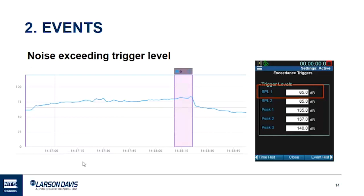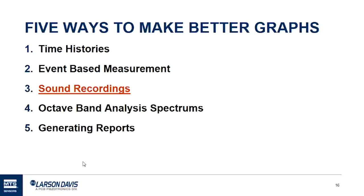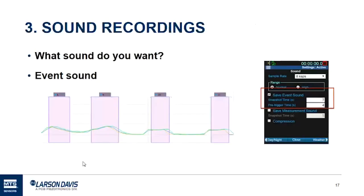Another way an event is triggered is based on the background noise — this is called dynamic triggering. I have a link at the end for a very informative video on dynamic triggering of loons making noises throughout the night, so if you'd like to learn more I suggest you look that up. An event is automatically recorded into the time history and portrayed as a purple highlight, so you can see how the sound is affected over time, how long the event lasted, and it keeps a count of how many events took place. In the new firmware update for the 831C, there are now other options for trigger sources — not just SPL; you can even use a running Leq to trigger an event.